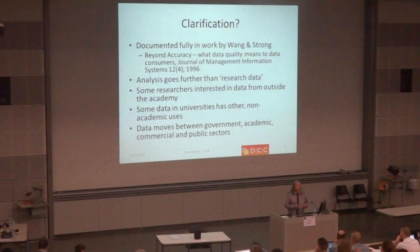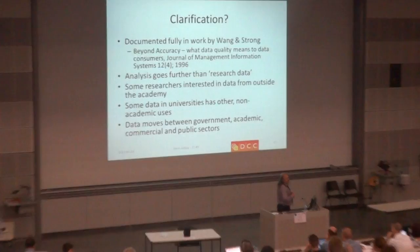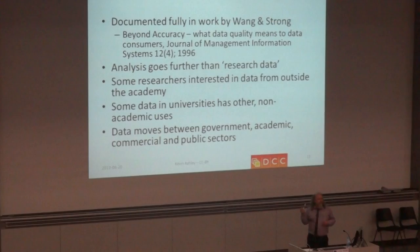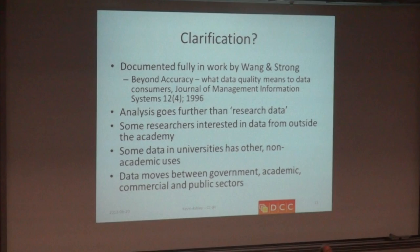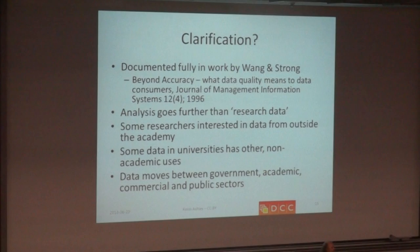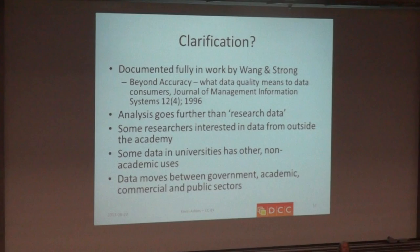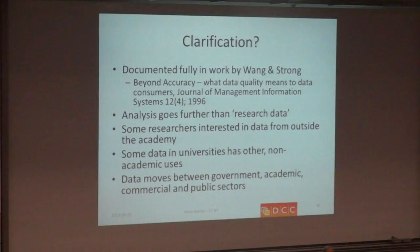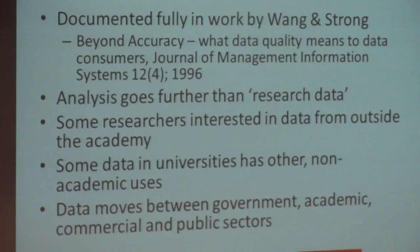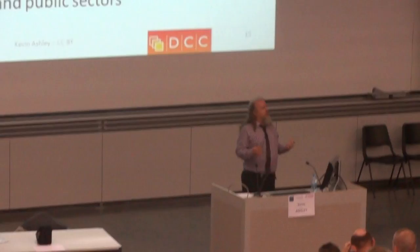There is some help at hand. Work was done in the 1990s by Mark Sellers, Wang and Strong, who wrote a paper called 'Beyond Accuracy: What Data Quality Means to Data Consumers.' I'm not going to go into the detail of what they did or how they did it, but they did an analysis looking at not so much research data, but data in different contexts of use — in government, in planning, in the commercial area — but it's applicable to research data as well. I think it's interesting to look at, because not all of the data that researchers are interested in comes from the academy. Some of the data that's produced there has uses outside the academic context.